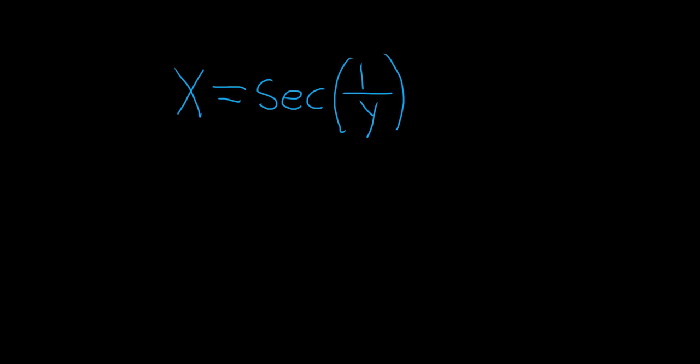Now on the right hand side we have a secant function and inside the function we have 1 over y. So when we take the derivative of this right hand side we're going to have to multiply by the derivative of the inside. So we have to keep that in mind as we go through the problem.